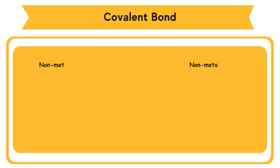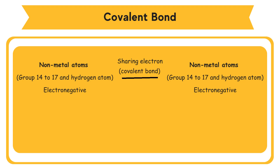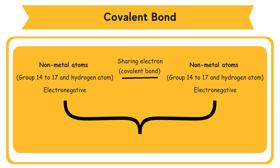Non-metal atoms, from group 14 to 17, and hydrogen atom, are electronegative, and are not likely to donate their valence electrons. Non-metal atoms can attain the stable electron arrangement through sharing of electrons. A covalent bond is formed when two or more atoms, of the same or different elements, share their valence electrons to achieve the stable electron arrangement. The new compound formed through sharing of electrons is a molecule.